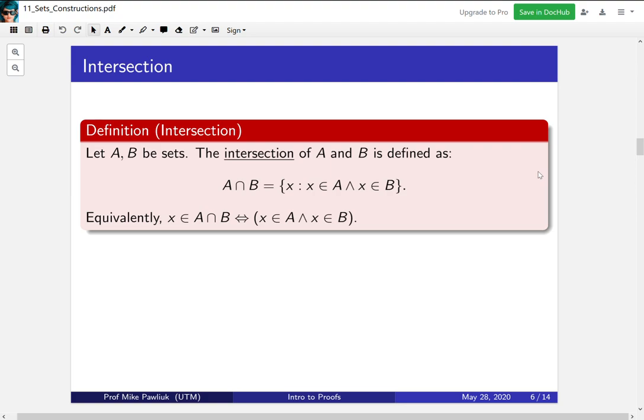Equivalently, you might want to write this as a statement of what it means for an element to be in the intersection. An element is in the intersection if and only if it's in both A and in B. This will be useful later on when proving things.